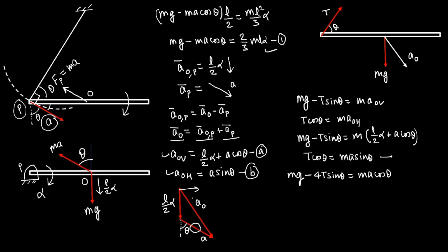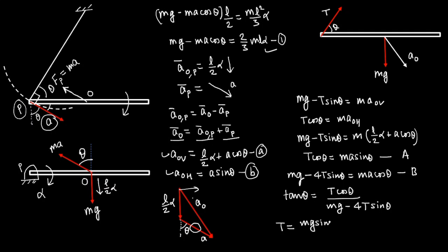Dividing the two equations, we get tanθ = T·cosθ / (mg − 4T·sinθ). Solving further, we get the tension T = mg·sinθ / (1 + 3sin²θ). This is the answer. I hope you got the concept. If you have any doubts or queries, please feel free to ask in the comments. Thank you.